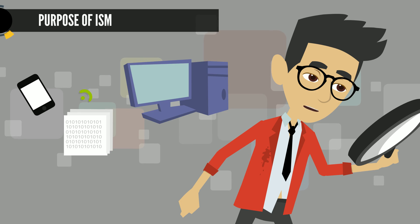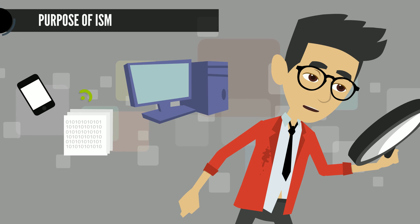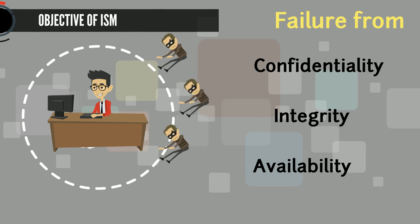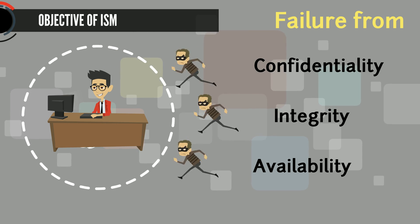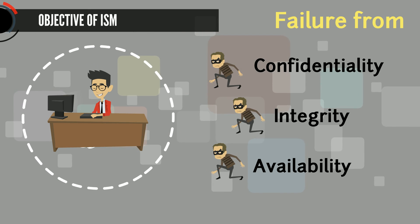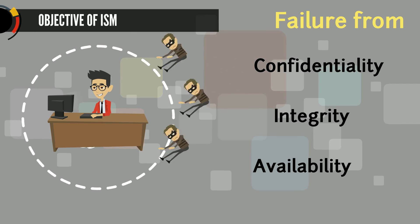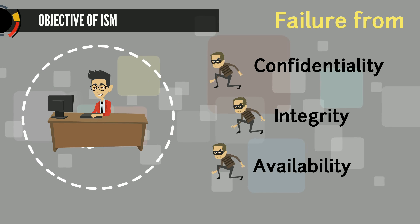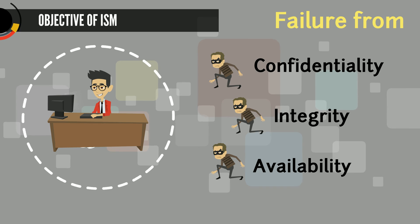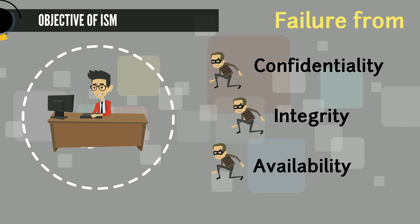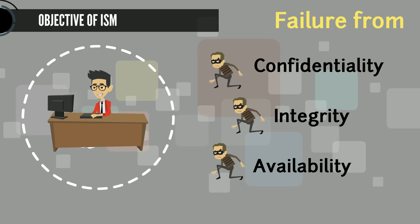The term information is used as a general term and includes data stores, databases and metadata. The objective of information security is to protect the interests of those relying on information and the systems and communications that deliver the information from harm resulting from failures of availability, confidentiality and integrity.